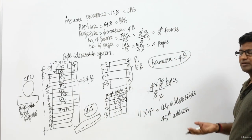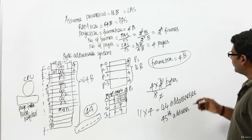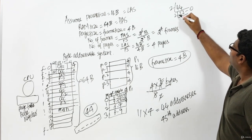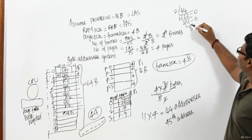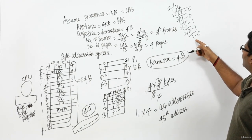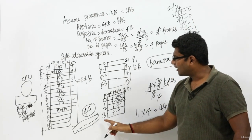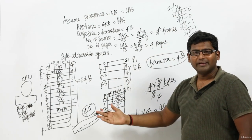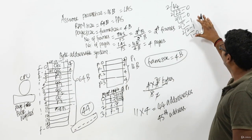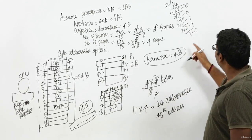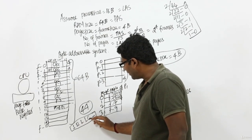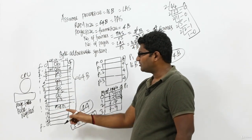How can we convert 44 to binary? Using successive division: 44 ÷ 2 = 22 remainder 0; 22 ÷ 2 = 11 remainder 0; 11 ÷ 2 = 5 remainder 1; 5 ÷ 2 = 2 remainder 1; 2 ÷ 2 = 1 remainder 0; 1 ÷ 2 = 0 remainder 1. Reading remainders from bottom: 101100. There are exactly 6 bits, which matches. So the base address of the page table of P1 is 101100. This address will be taken and loaded inside the page table base register.